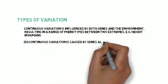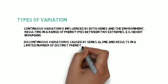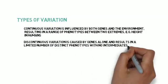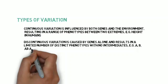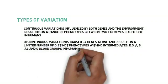Discontinuous variation is caused by genes alone and results in a limited number of distinct phenotypes with no intermediates, for example, A, B, O and AB blood groups in humans.